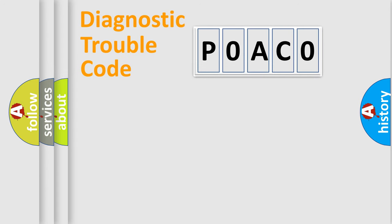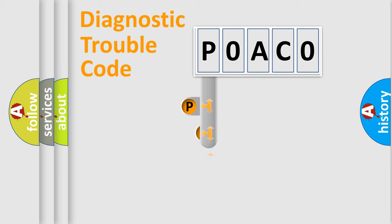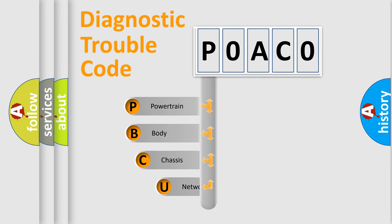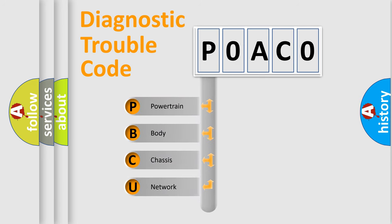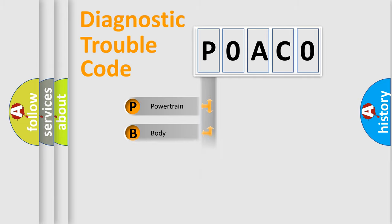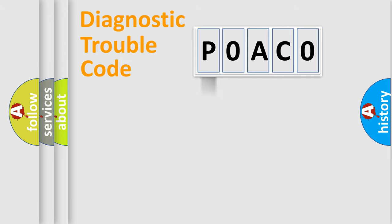Let's do this. First, let's look at the history of diagnostic fault code composition according to the OBD2 protocol, which is unified for all automakers since 2000. We divide the electric system of an automobile into four basic units: Powertrain, Body, Chassis, and Network. This distribution is defined in the first character of the code.